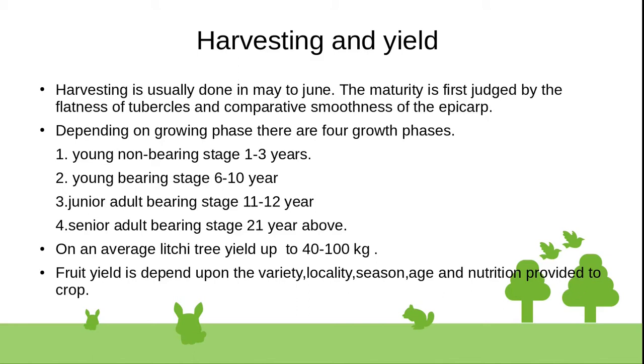Harvesting and yield: harvesting is usually done in May to June. Maturity is first judged by flatness of tubercle cells and comparative smoothness of the epicarp.